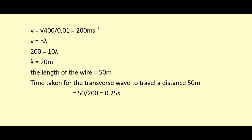That is the velocity value. Then we find the wavelength. V equals N times lambda. Velocity value is 200, N value is 10, so lambda equals 20 meter. Next, the second part: time taken for the transverse wave to travel a distance of 50 meter. T equals length divided by velocity, so 50 divided by 200. We get the answer 0.25 second.